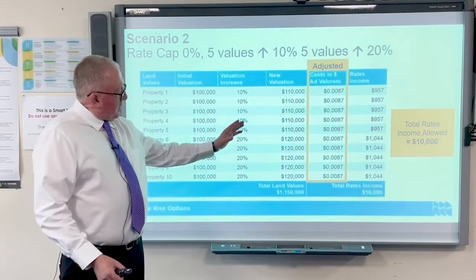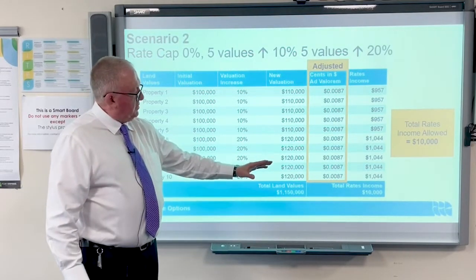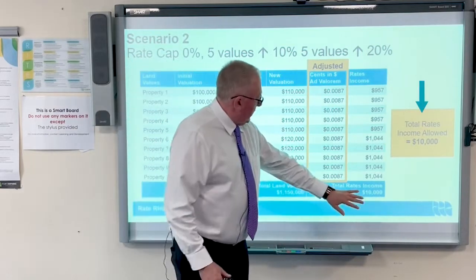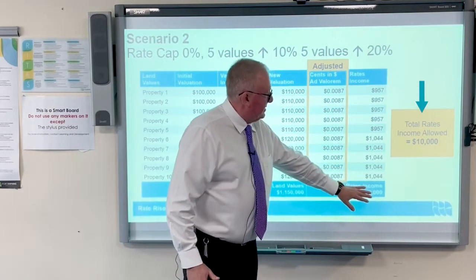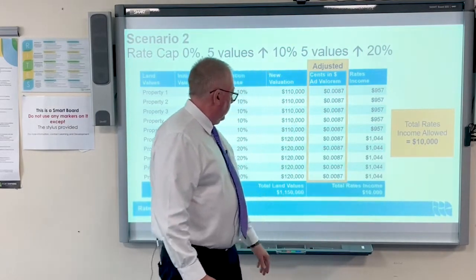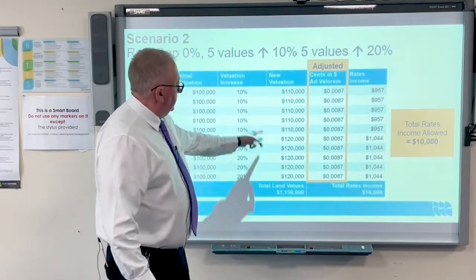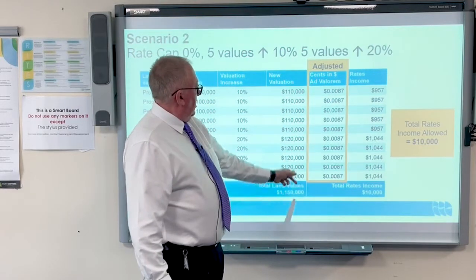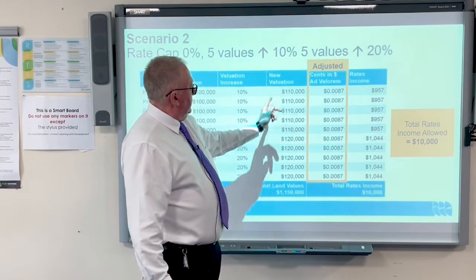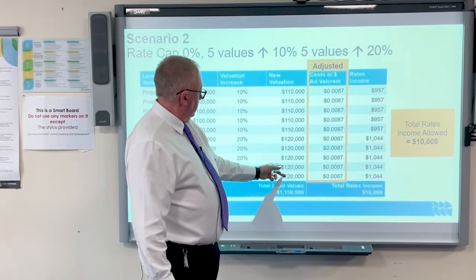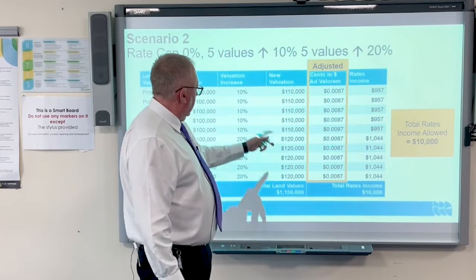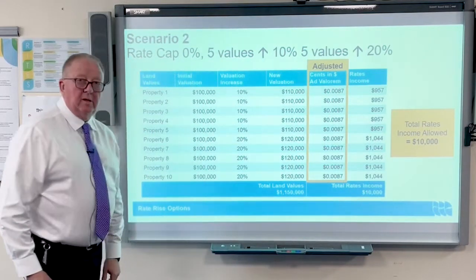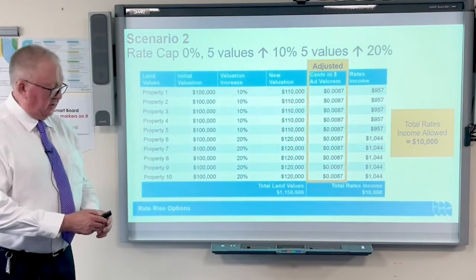The key points to draw from this: total rates stays the same — we're not allowed to levy any more than that. It's simply the composition that is charged to each individual ratepayer based on their increases in land valuations.